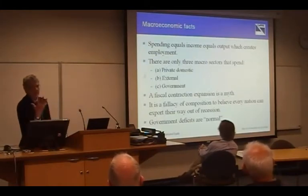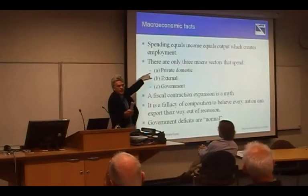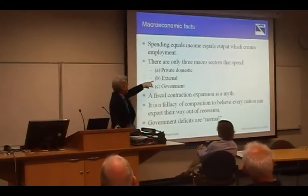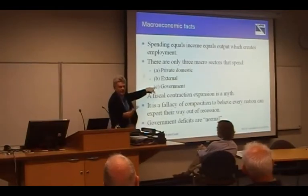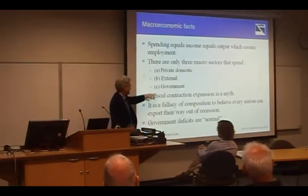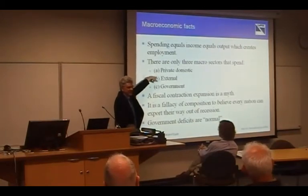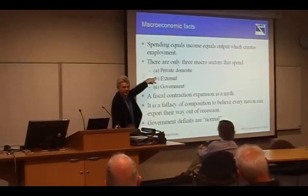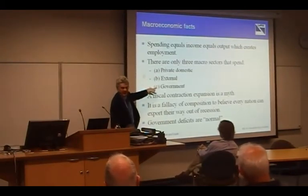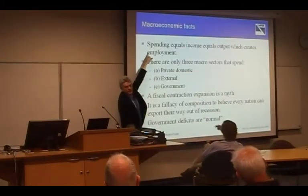There are only three macro sectors broadly: the private domestic sector, which includes households and firms who consume and invest; the external sector, where trade and financial flows occur; and the government sector, where fiscal policy and monetary policy operate. If these two sectors are not spending much, or are draining demand so that output isn't growing, then there's only one sector left to fulfil this basic rule of macroeconomics.